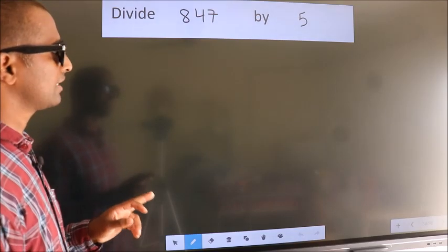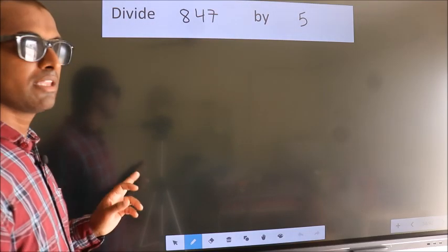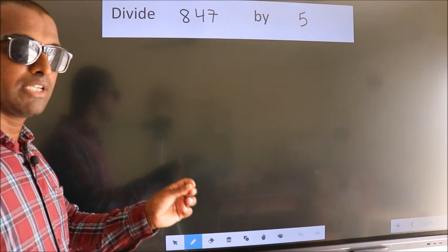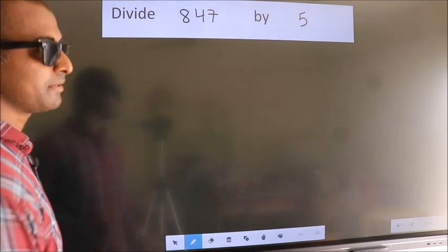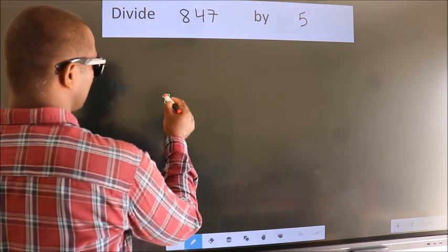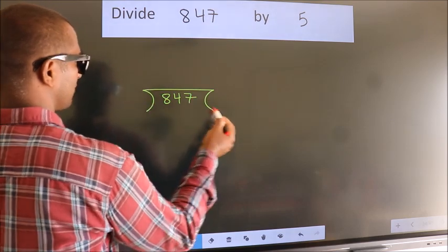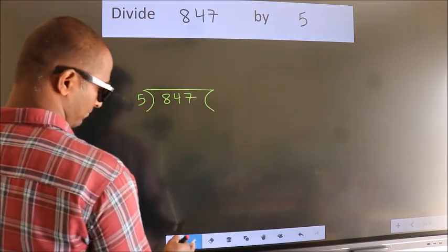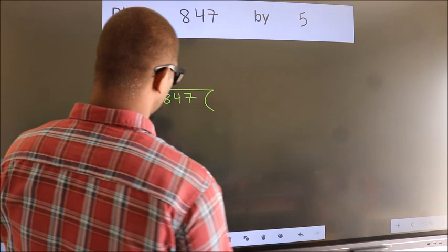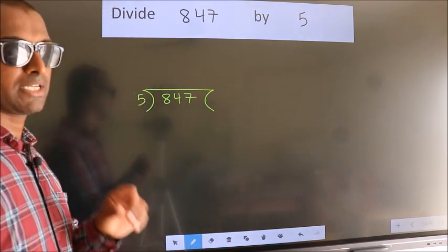Divide 847 by 5. To do this division, we should frame it in this way. 847 here, 5 here. This is your step 1.